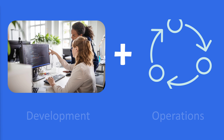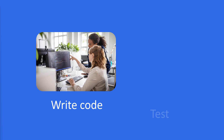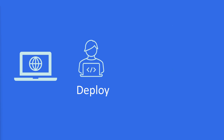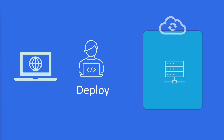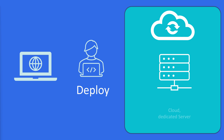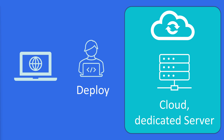Firstly, you should know that DevOps is an abbreviation of development and operation. Development is a stage where a developer writes the application and tests it. The operation part is when the application is deployed and maintained on a server — maybe a cloud or a dedicated server. DevOps is a link between these two parts.